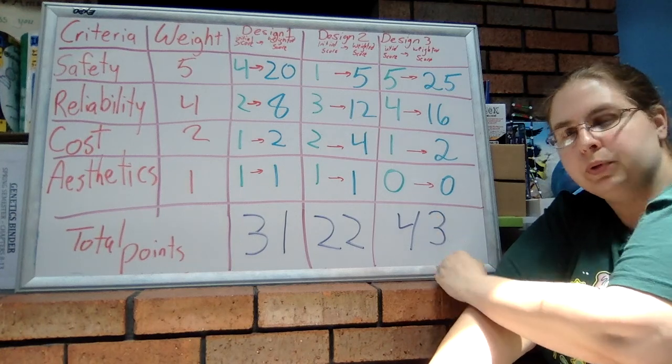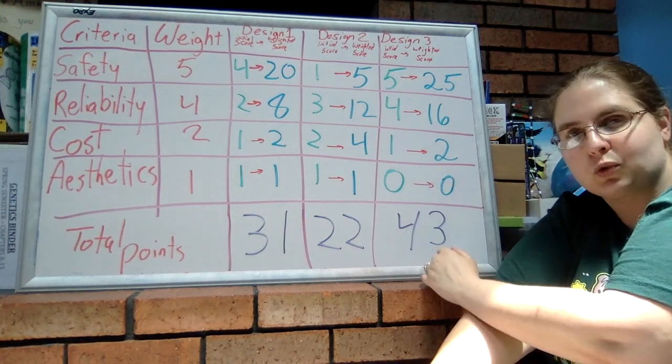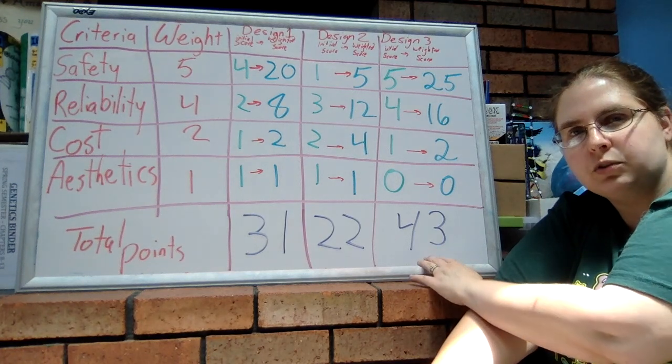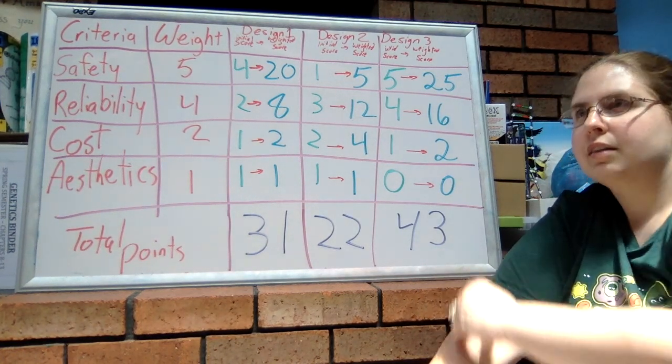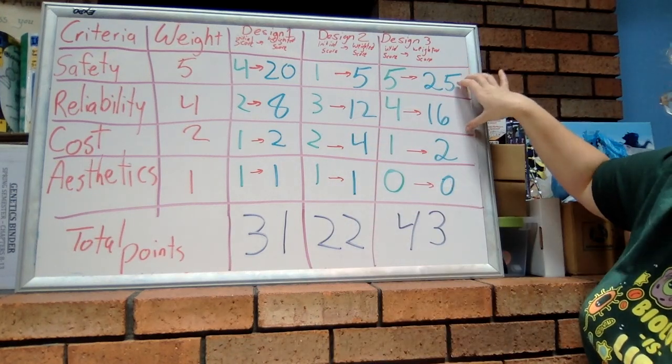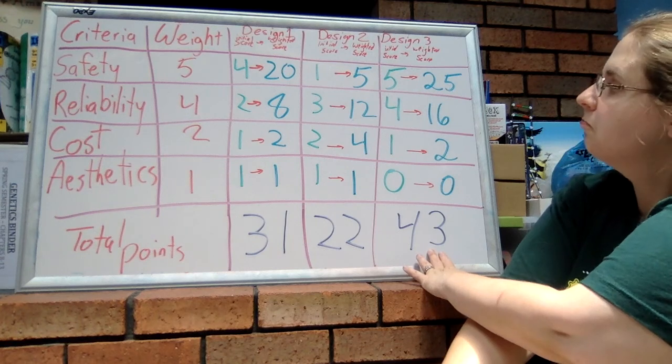So when we add up the total points, we can see not just our initial scores, but we can also see how the weights—so the importance—is reflected by giving us this number.